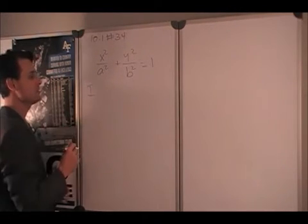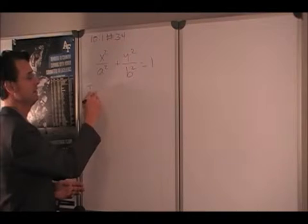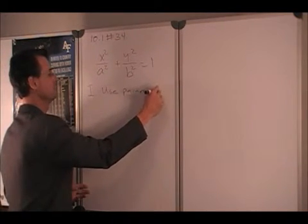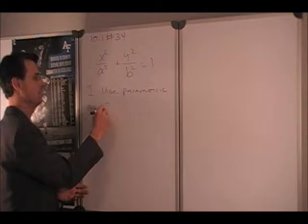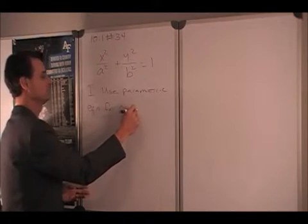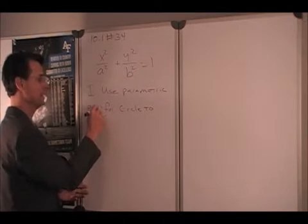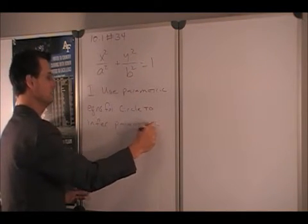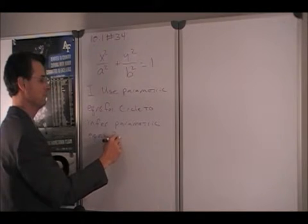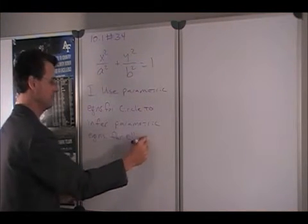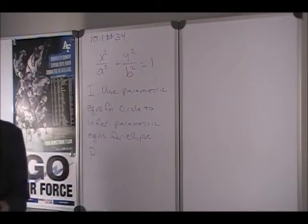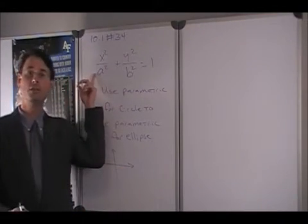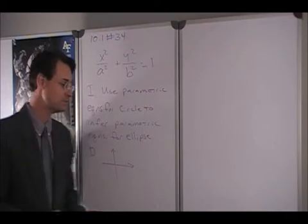Let's go ahead and use our IDEA problem-solving format. For the I — identify — we want to use the parametric equation for a circle to infer the parametric equations for the ellipse. To begin developing the problem, we want to draw a picture, which will help us remember what this ellipse looks like. This is the equation of the ellipse in Cartesian coordinates.